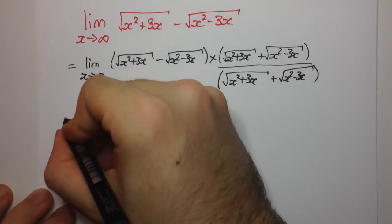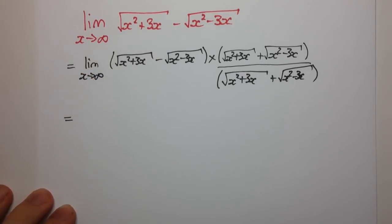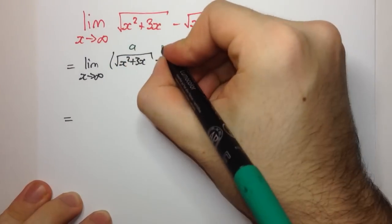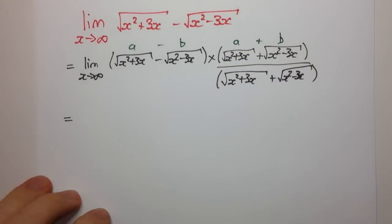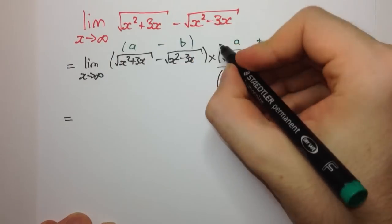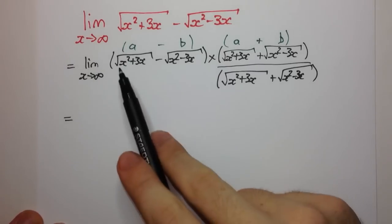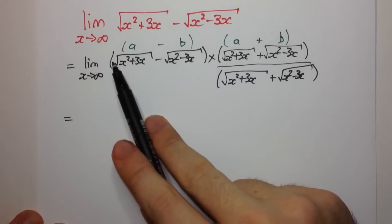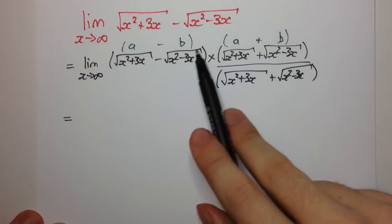So what we've done, we've just multiplied by one, which is perfectly okay. The reason we do this is because here we have a term that follows the pattern of a minus b multiplied by a plus b. This simplifies to a squared minus b squared. Why is this helpful? Because when we get the a squared term, it's going to eliminate this radical here, and when we get the b squared term, it's going to eliminate this radical here.